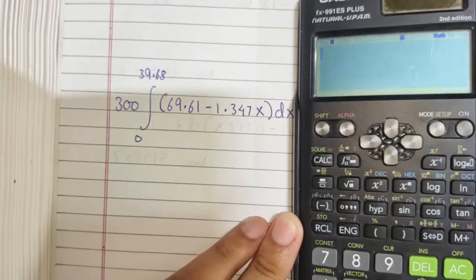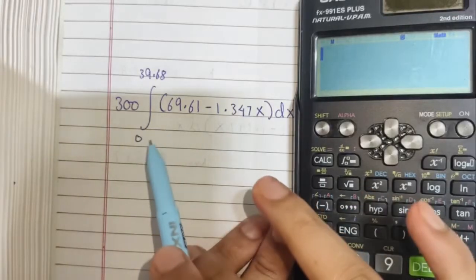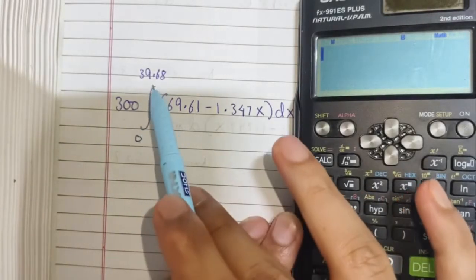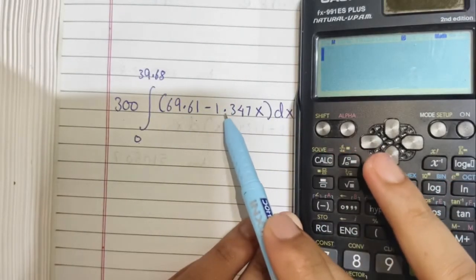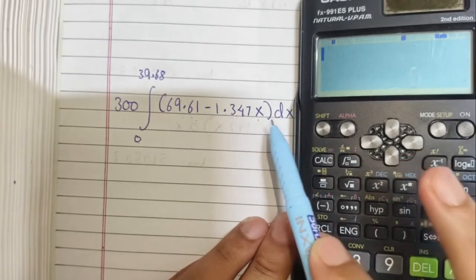Let's check out another example. This is a much simpler one. Here, we have 300, lower limit to be 0, upper limit to be 39.68, 69.61 minus 1.347 x dx.